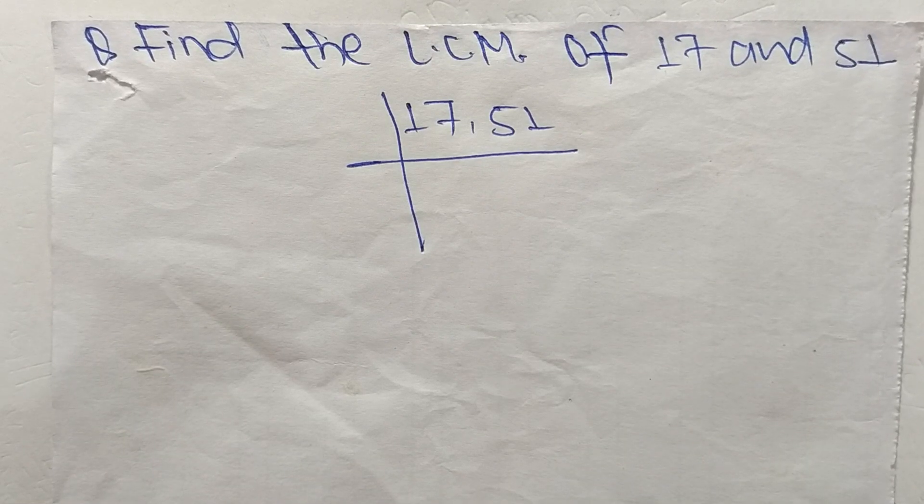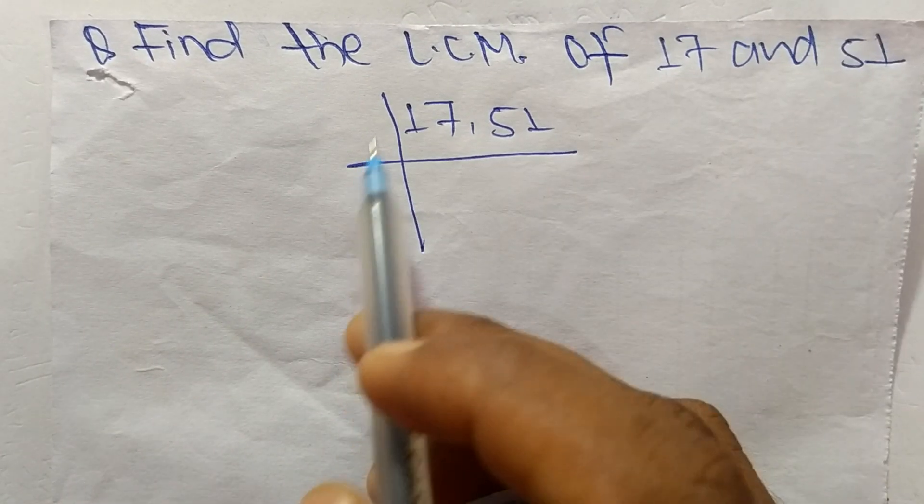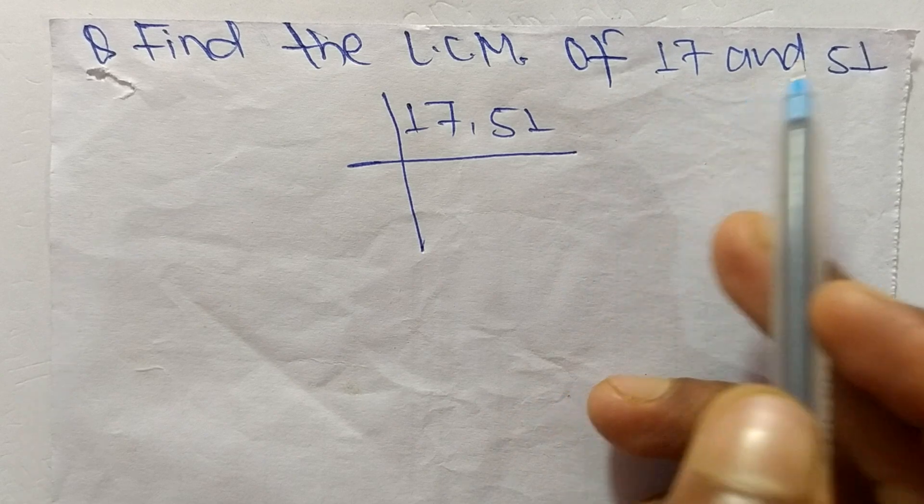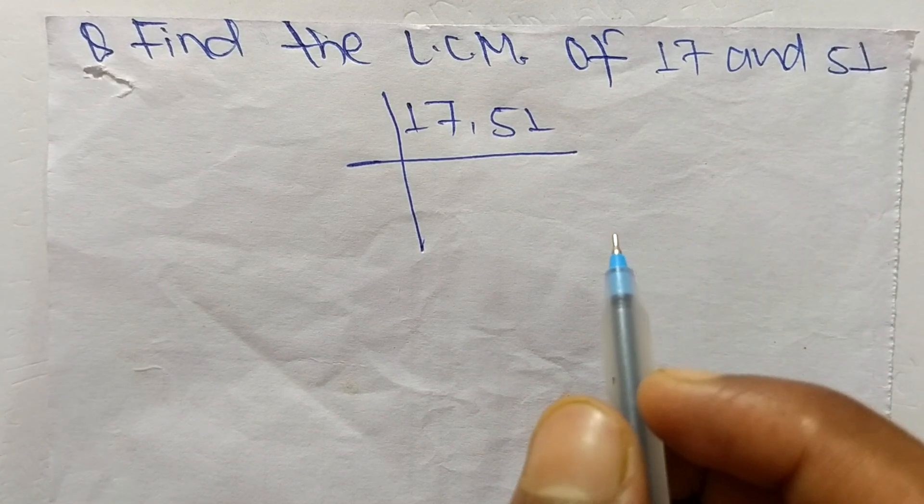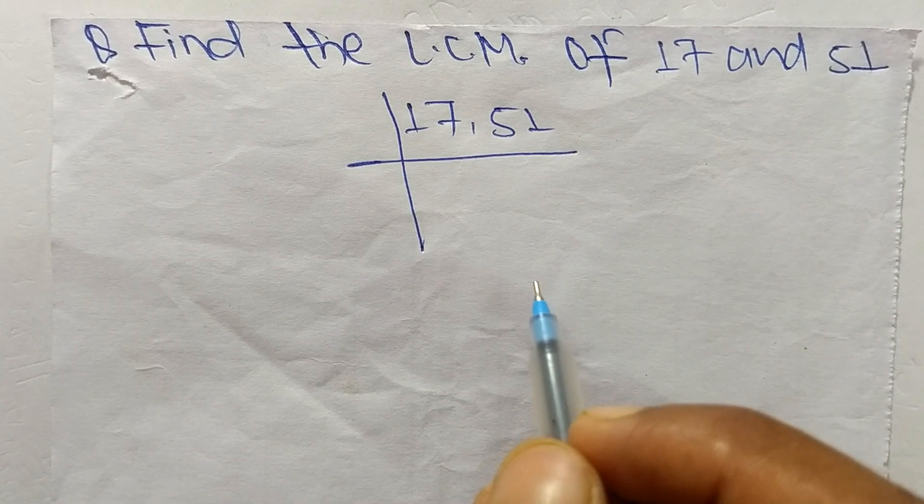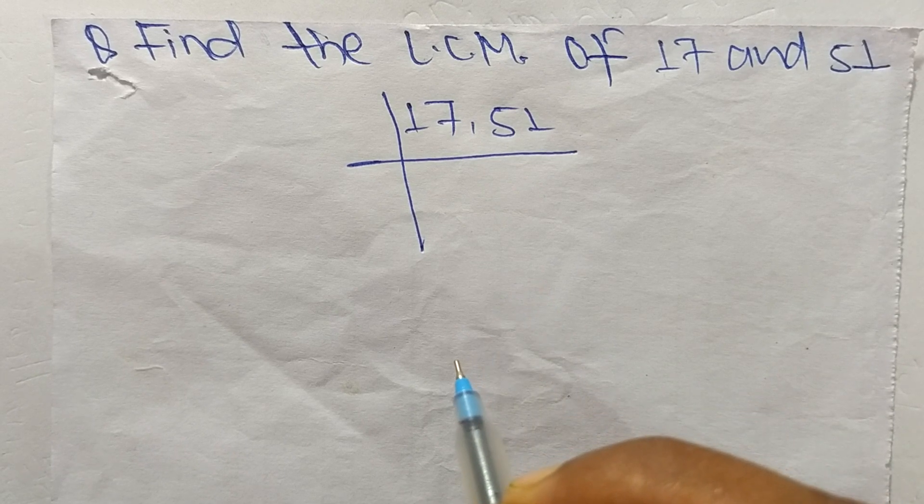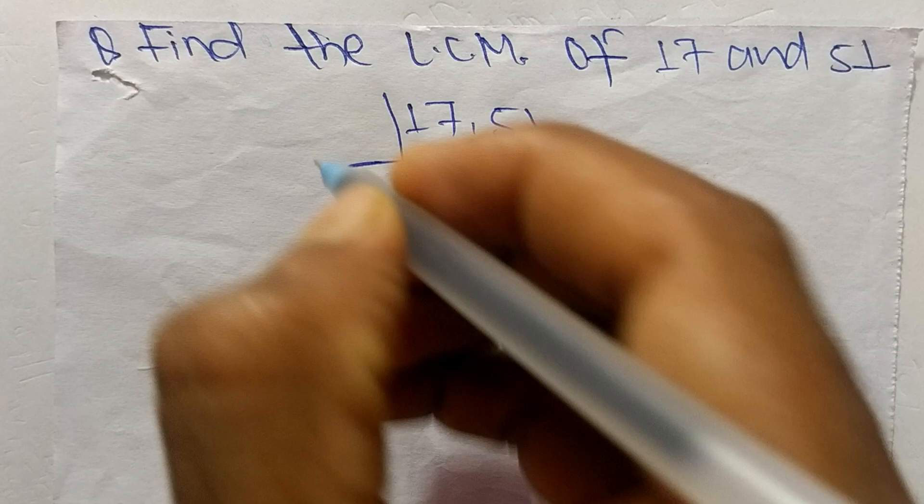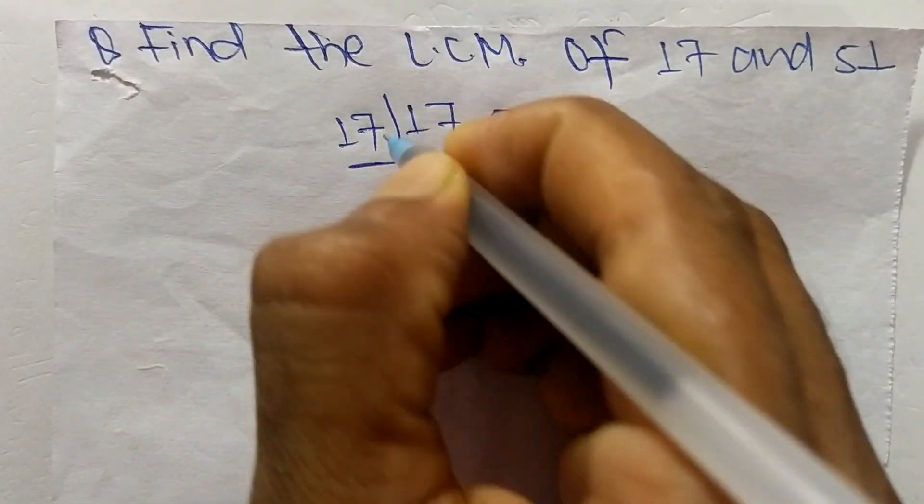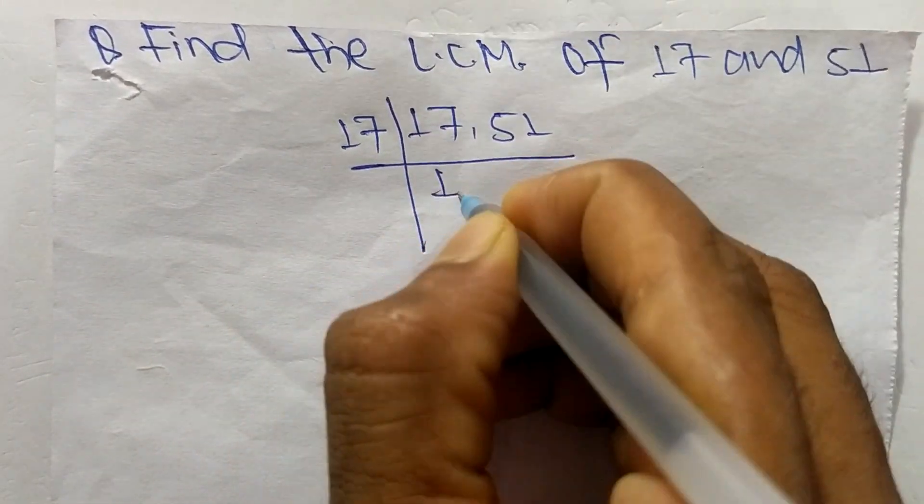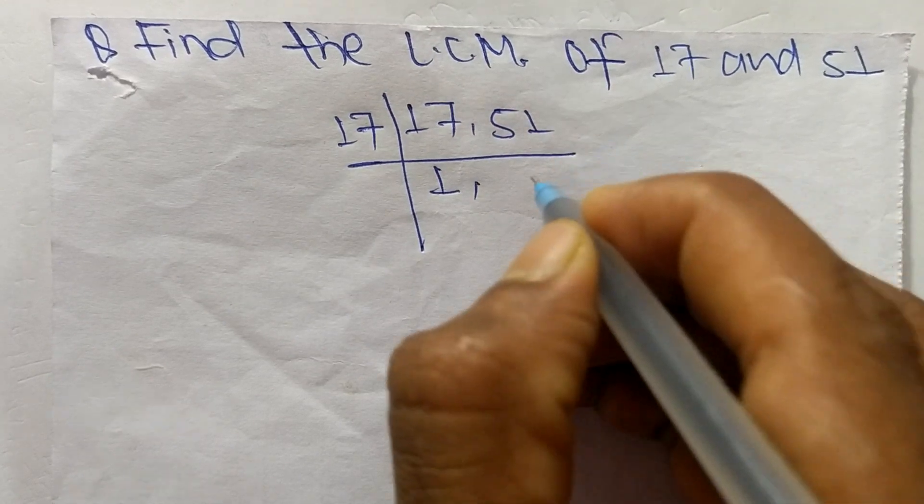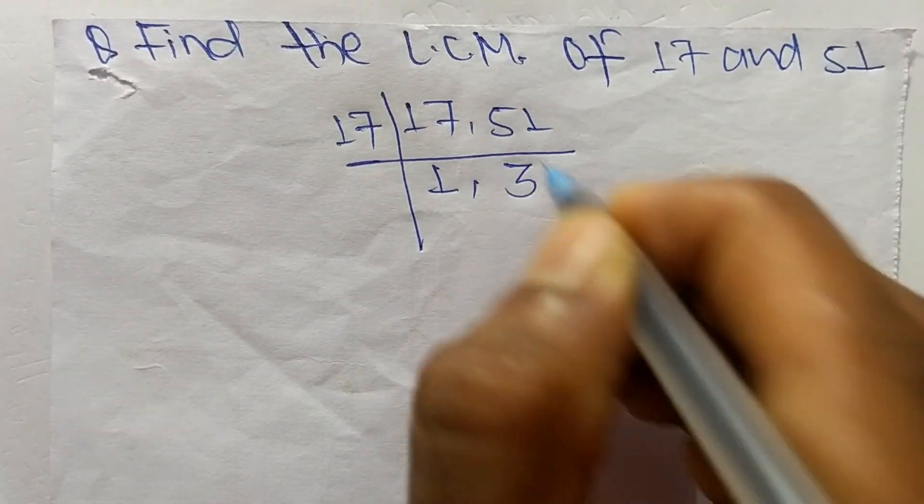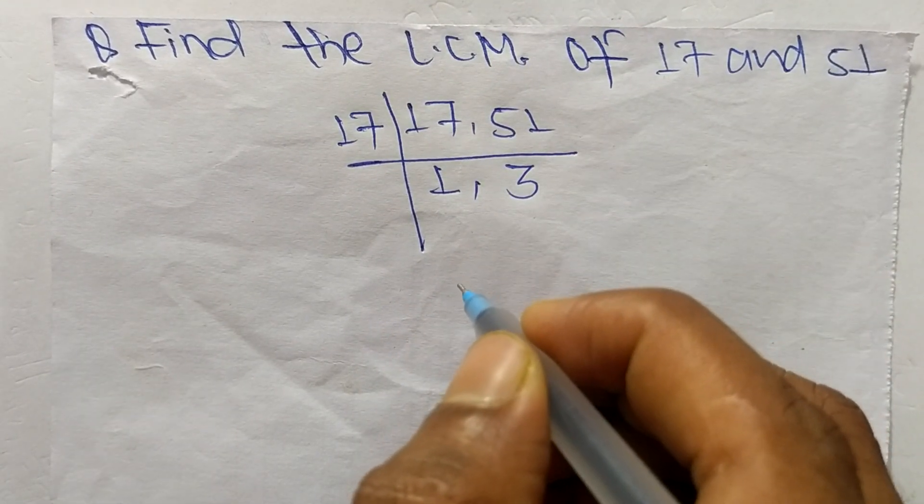So today in this video we shall learn to find the LCM of 17 and 51. To find LCM, first of all we have to choose the lowest number that can exactly divide 17 and 51. So the number is 17. 17 times 1 means it is 17, 17 times 3 means it is 51. So at last we have 1 and 3 which is not exactly divisible by the same number.